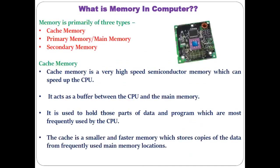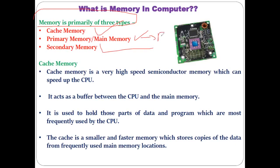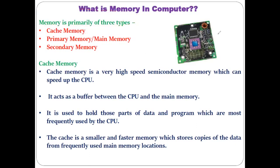There are different kinds of memory available in a computer system. Memory is primarily divided into three types: cache memory, primary memory (also called main memory or physical memory, which is RAM), and secondary memory (the hard disk, which is a magnetic disk). Cache memory is also an important type — it is a buffer available on the motherboard in the form of semiconductor components. Cache memory is a very high-speed semiconductor memory that speeds up the CPU.